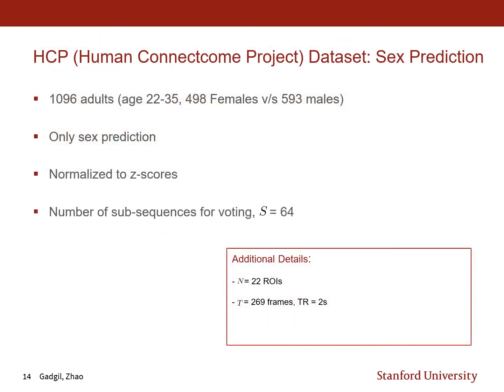The second dataset used was HCP, or the Human Connectome Project, which distributes public research data focused on connections within the human brain. This dataset was only used for sex prediction since the age range was quite small, between 22 and 35. The BOLD signal values were normalized to Z-scores, with S equals 64 sub-sequences for voting, N equals 22 ROIs, and a BOLD signal length of T equals 269 frames with a TR of 2 seconds.